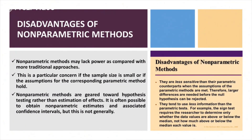Disadvantages of non-parametric tests: they are considered less accurate and have less power compared to parametric tests. This is a particular concern when the sample size is small or when assumptions for the corresponding parametric methods do hold. They lean toward hypothesis testing rather than estimation of the effect, whereas parametric tests handle hypothesis testing more accurately. It is sometimes possible to obtain non-parametric estimates and confidence intervals, but this is not general — overall, you derive less information from non-parametric tests.